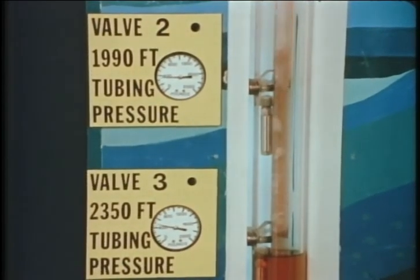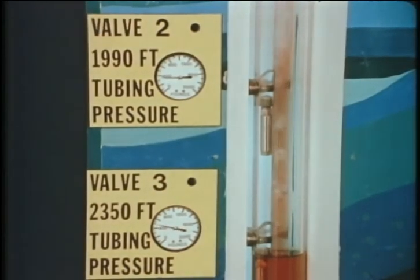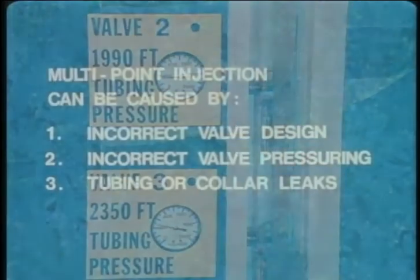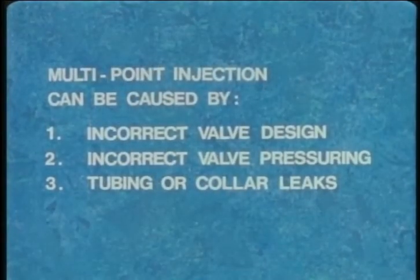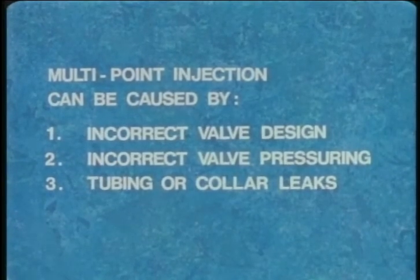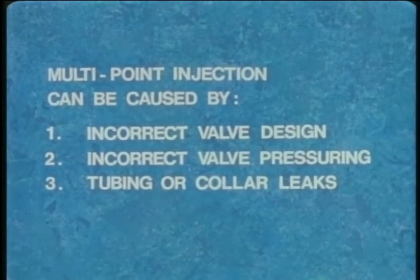C, single point injection. In continuous flow gas lift, any condition that allows gas injection into the tubing at more than one point is usually inefficient. Multi-point injection can be caused by: one, incorrect valve design; two, incorrect valve pressuring; or three, tubing or collar leaks.